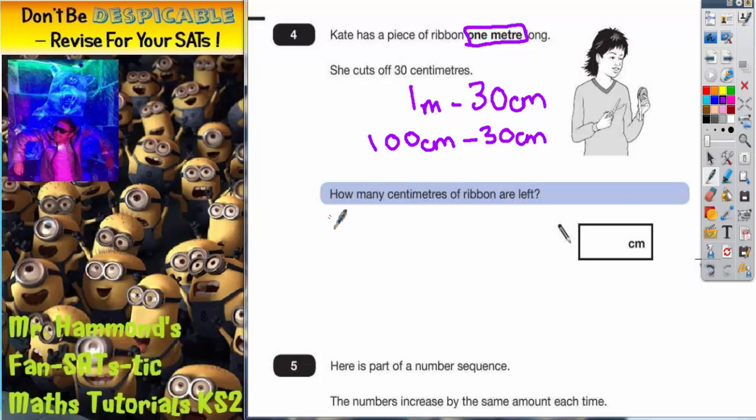So we're just doing a subtraction here. There's different ways we could do it. 100 minus 30. 0, 0. 0, 0 take away 3 we can't do. So we're going to borrow 10 take away 3 is 7. So the answer is 70 centimeters.